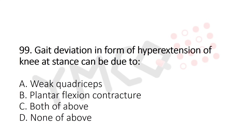Question 99: Gait deviation in the form of hyperextension of the knee at stance can be due to — option A: weak quadriceps, option B: plantar flexion contracture, option C: both of the above, option D: none of the above. The answer is option C: both of the above.